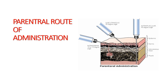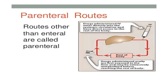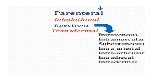The next group is parenteral route of administration, which comes under systemic administration. Here the drug enters the systemic circulation or blood vessels directly. By definition, parenteral route means any route of administration other than the oral route, without involvement of the GIT. It is divided into intravenous, intramuscular, subcutaneous, intra-arterial, intra-articular, and intradermal routes. The four important ones to remember are intravenous, intramuscular, subcutaneous, and intradermal.